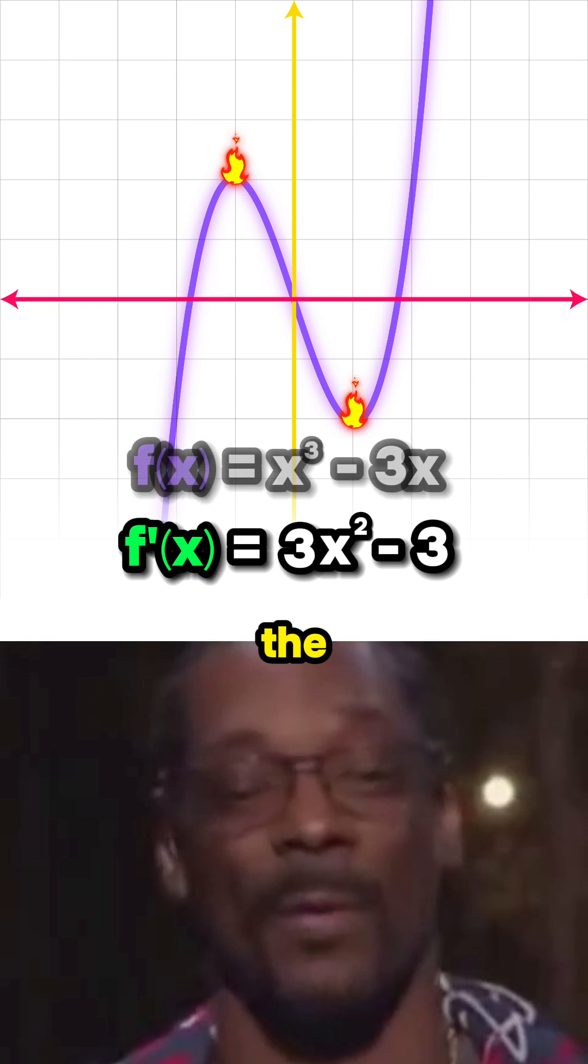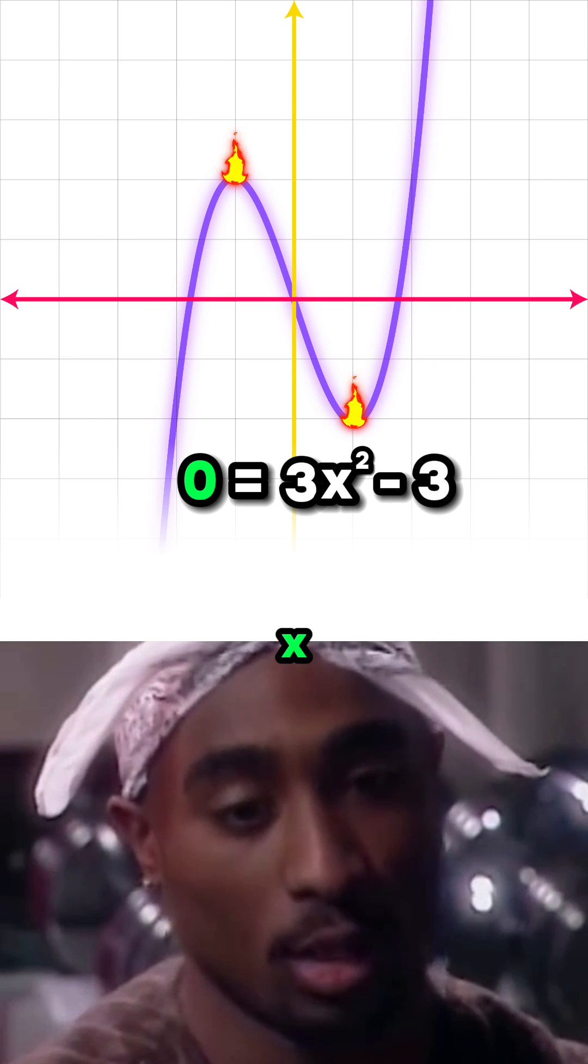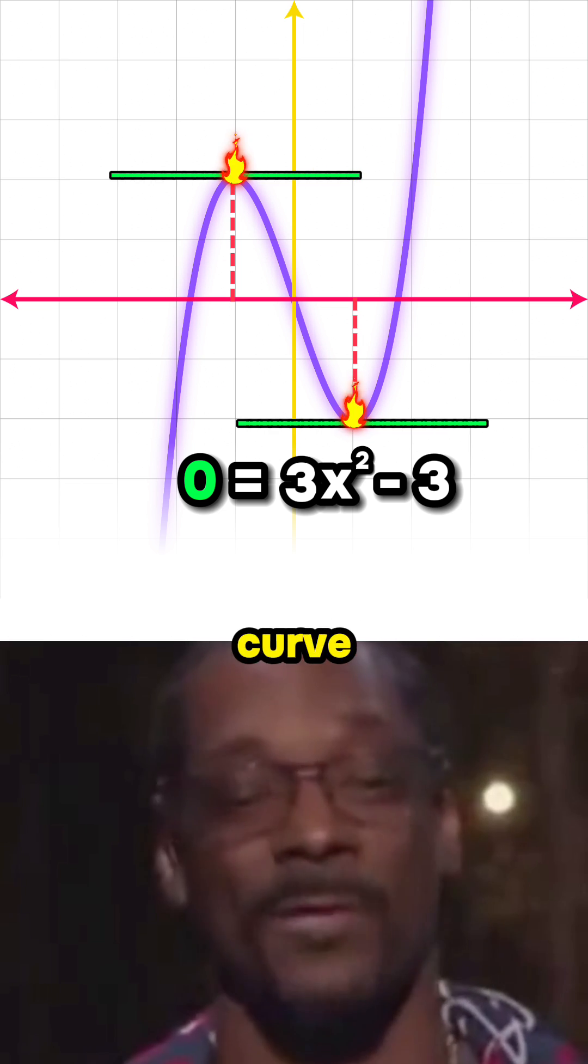What's step two? Step two is setting the derivative equal to zero. And we do that because if we now solve for x, that'll tell us the x coordinates where the derivative is equal to zero. That's where the tangent to the curve is flat.